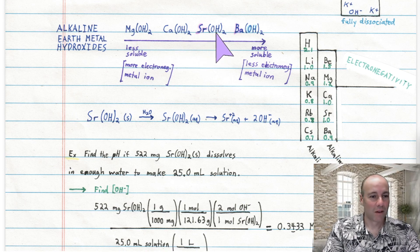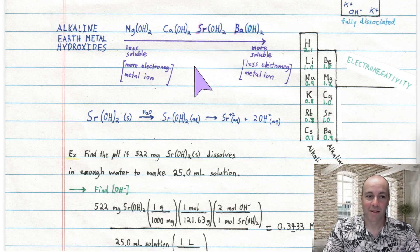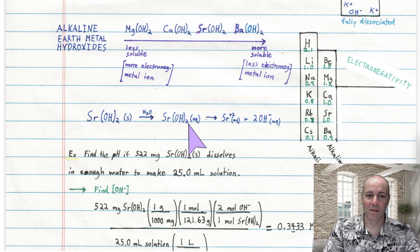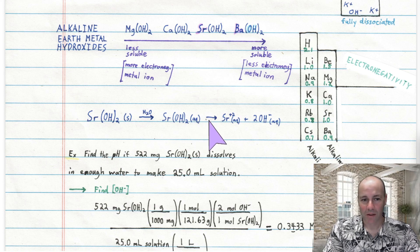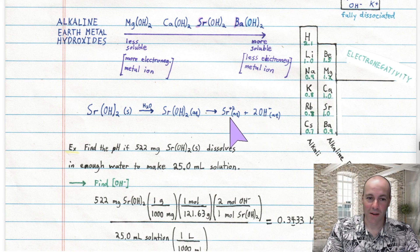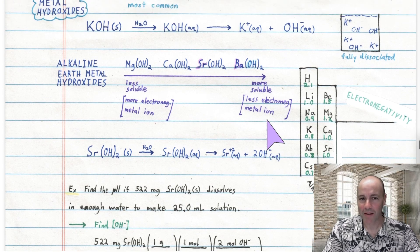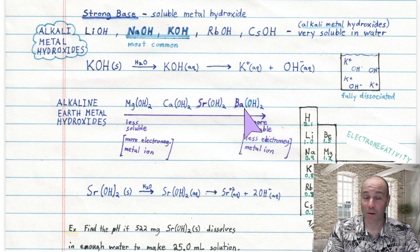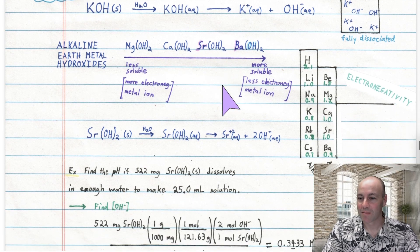Let's look at strontium hydroxide as an example. Notice that the formula is strontium with two hydroxides, so it has the ability to release two of them. It is a solid in its pure form, but when put in contact with water it dissolves as an aqueous solution. Like all ionic compounds when dissolved, it fully dissociates into strontium 2+ ions and two hydroxide minus ions. So you get two hydroxides per formula unit — in that respect, alkaline earth hydroxides are more powerful than those giving only one hydroxide per formula unit.